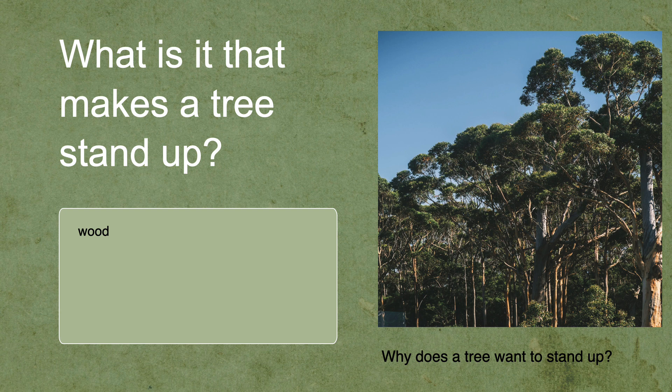What is it that actually makes the tree stand up? It's wood. Wood is a very strong structure, so it enables the tree to mechanically stand upright. Trees also stand upright because of roots anchoring them to the ground — we'll come on to roots in a bit, but they're a really essential part of why trees stand up. The other thing is shape, and we'll look at how different shapes of trees impact on whether they stand up or not.